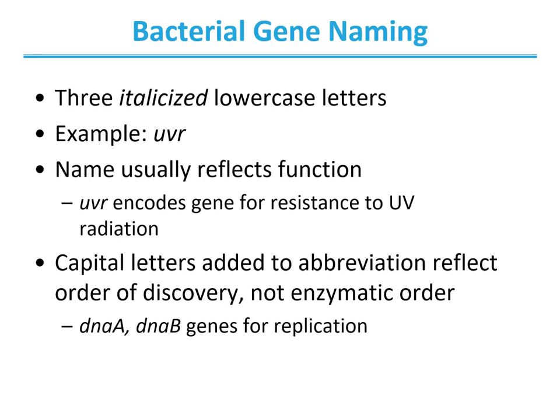Bacterial gene naming. This is the convention used by geneticists to name genes in bacteria. Genes are named using three lowercase italicized letters — for example, UVR. The name usually reflects a function, either a genetic function or a physiological observation. UVR encodes genes for resistance to UV radiation. Capital letters are added to these three-letter names in the order of their discovery — so DNA-A was discovered first, DNA-B second, DNA-C third, and so forth.